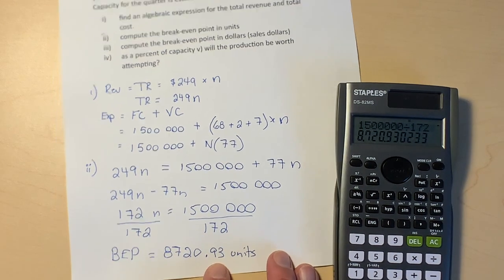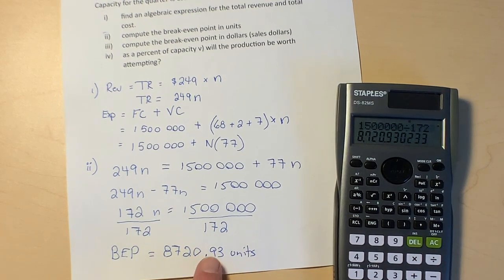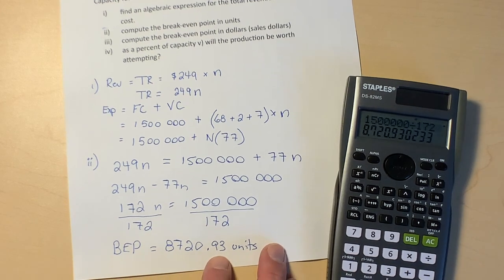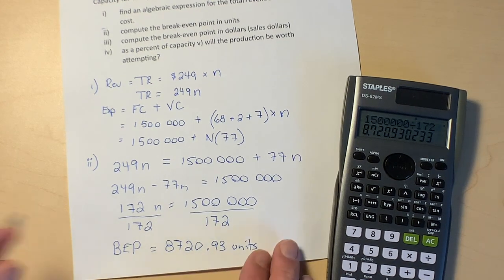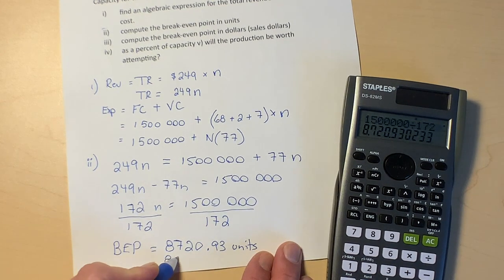I don't know about you guys, but I find it very difficult to sell 0.93 of a unit, so probably if we were in business we'd want to round that up. We'd want to say really we need 8,721 units.